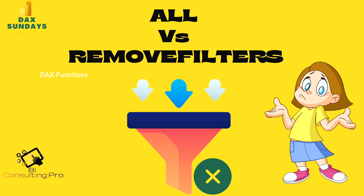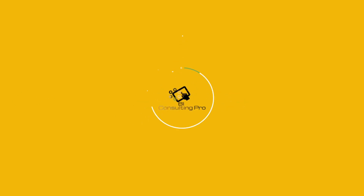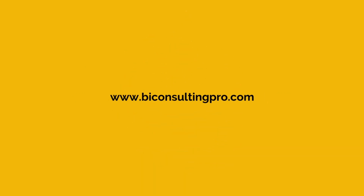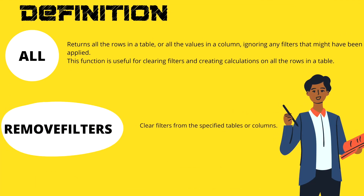Let's get started. First, let's discuss the definitions of ALL and REMOVEFILTERS. ALL filter is going to return all the rows in a table or all the values in a column, ignoring any filters that might have been applied. This function is useful for clearing filters and creating calculations on all the rows in a table.